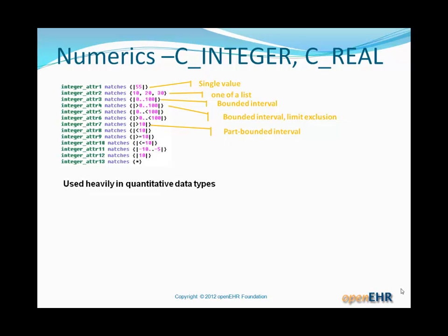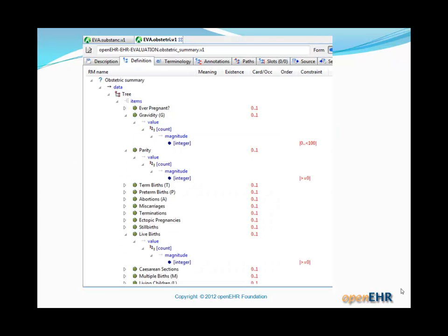So these numeric constraints are used heavily in quantitative data types, that is industry specific data types. So there's some examples there from an archetype for obstetric summary. We have three fields that have been opened out: Gravidity, which is number of pregnancies, parity, live births. And you can see that they eventually all devolve down to integers, which happen to be the ultimate data type of an industry health data type called COUNT, that's used by the OpenEHR reference model in HL7. That would be the INT data type. You can see in the right hand column the actual constraint 0 to 100, larger than or equal to 0.